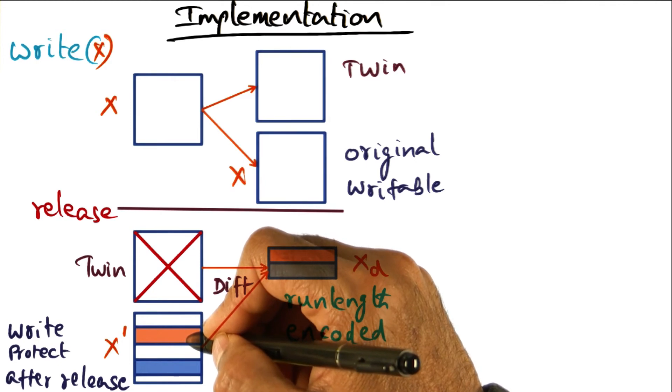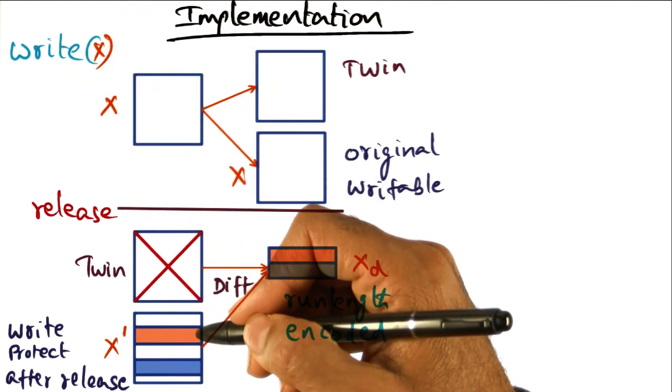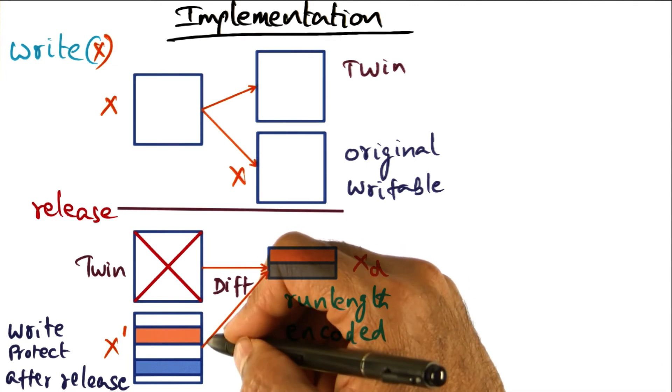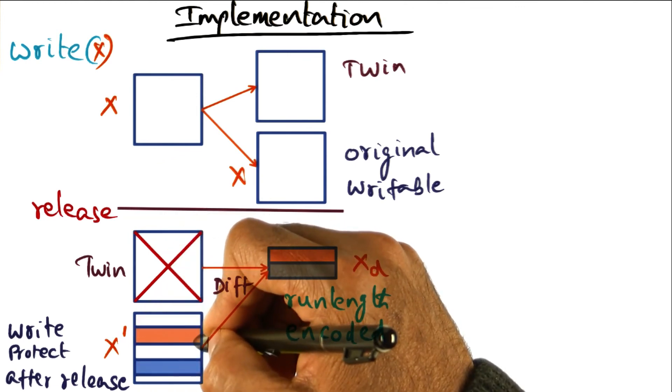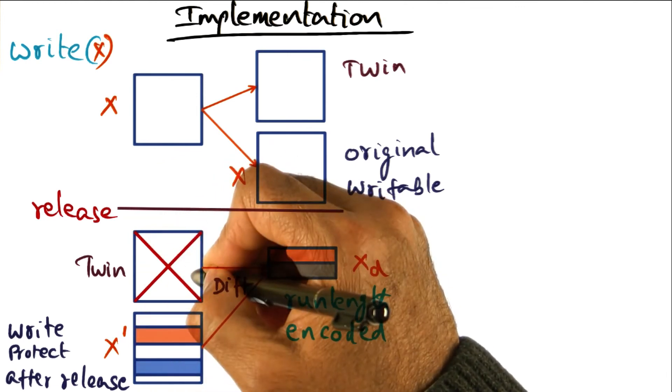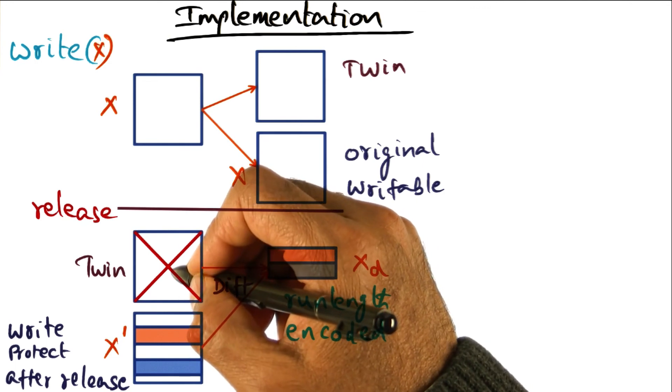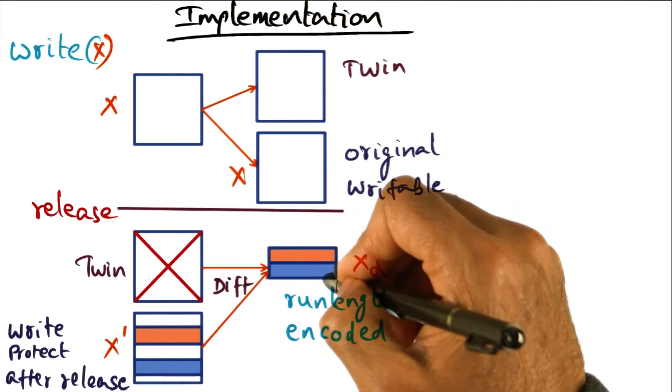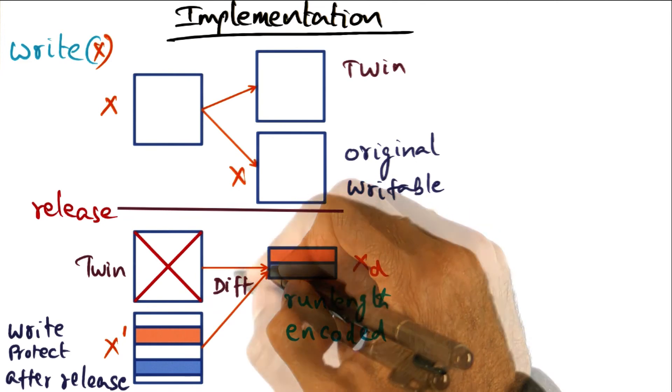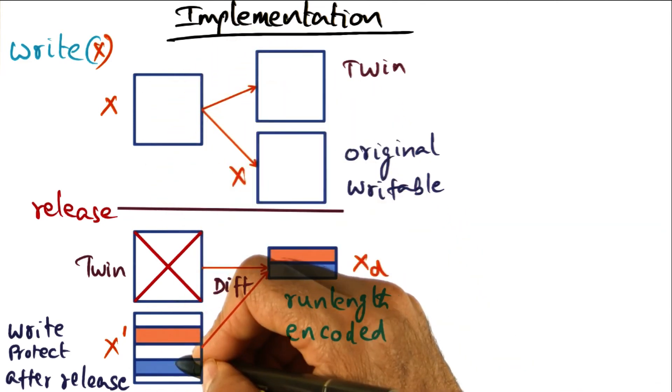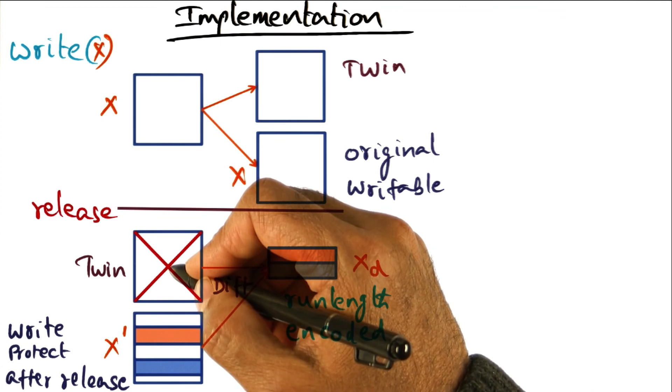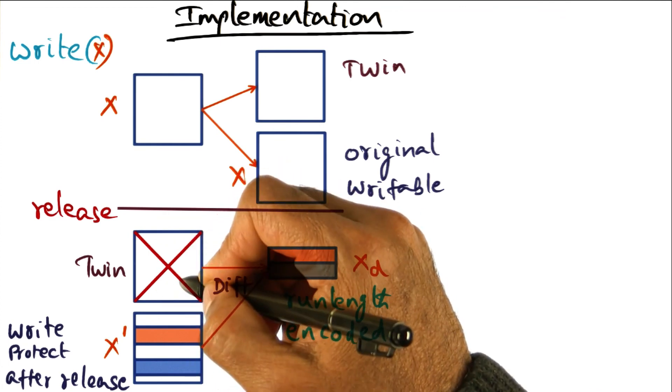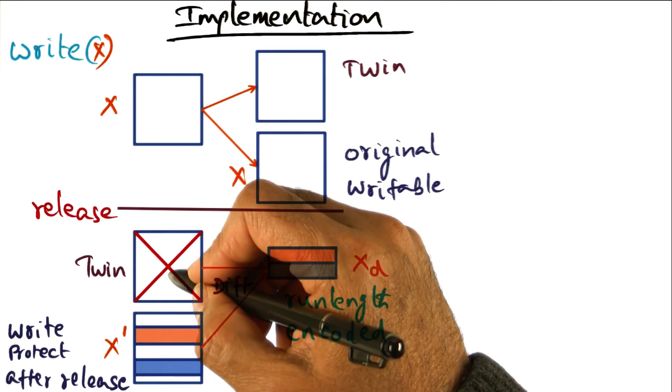We are write protecting it to indicate that this guy cannot write to it anymore unless he gets into a critical section and we have to do the coherence actions again. And that's the implementation of the protocol. And at this point, we write protect the original page, and we can also get rid of the twin. The use for this twin is complete. We only needed it in order to compute this diff. We've computed it, and we've write protected the original page, and everything that needs to be done on this node is complete, and we can get rid of this twin. And getting rid of this twin essentially means that we are freeing up the physical memory that we allocated for creating the twin in the first place.